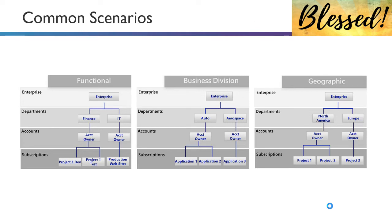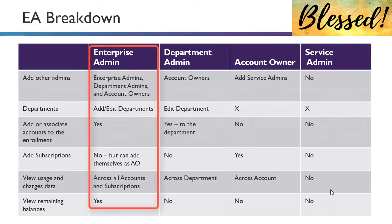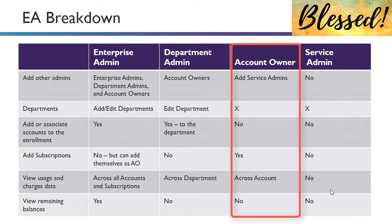Breaking down EA account roles: enterprise admin, department admin, account owner, and service admin. The enterprise admin can add other admins, edit departments, and associate accounts to the enrollment, but cannot directly add subscriptions — though they could make themselves an account owner to do so. The account owner can add service admins and create subscriptions, but cannot add departments or additional accounts within the enterprise agreement.